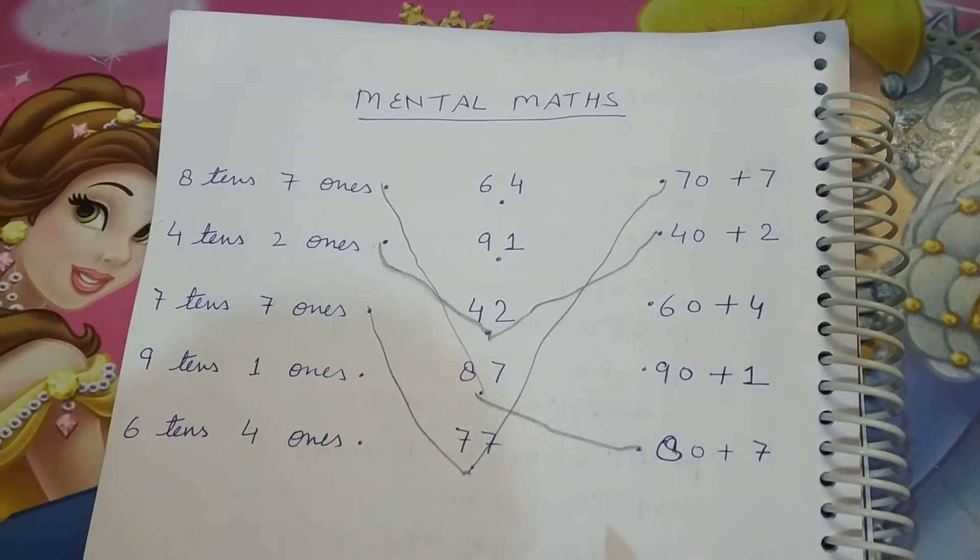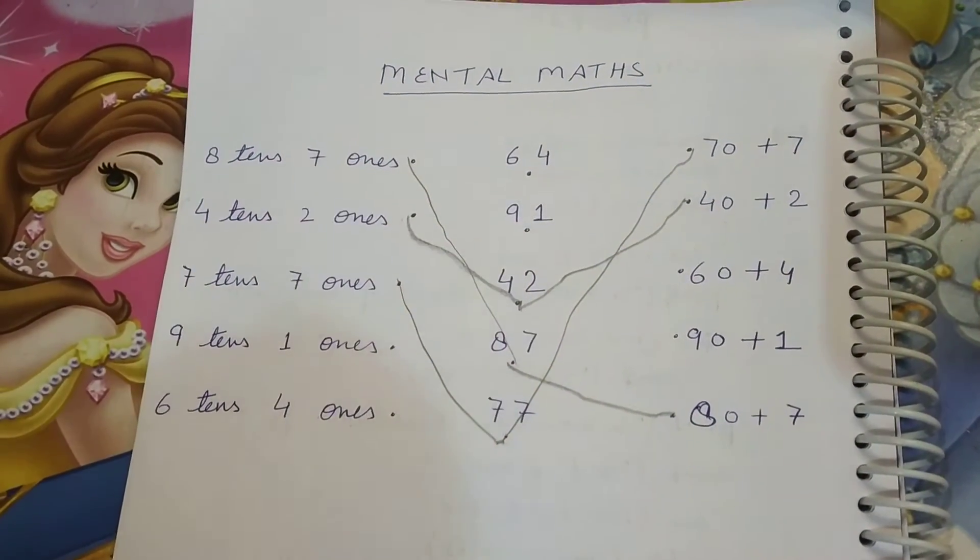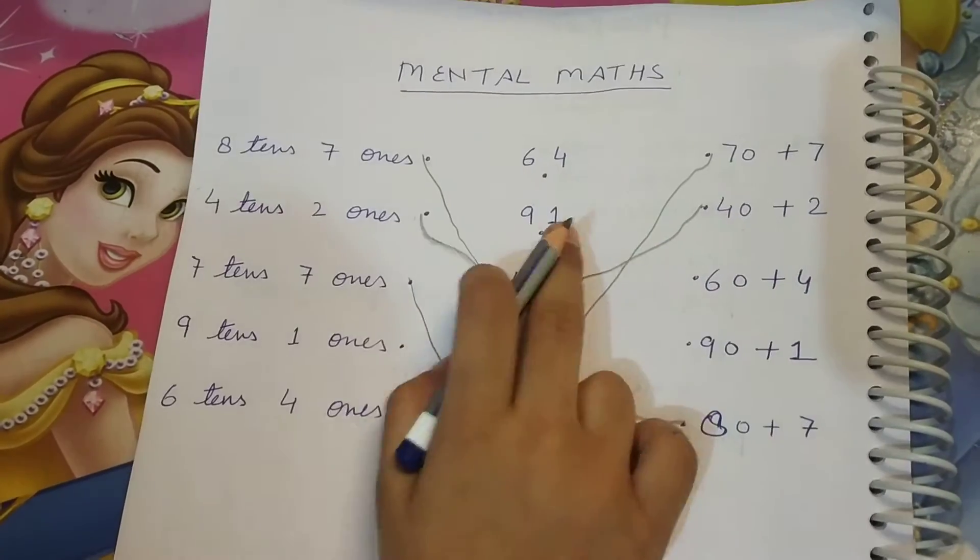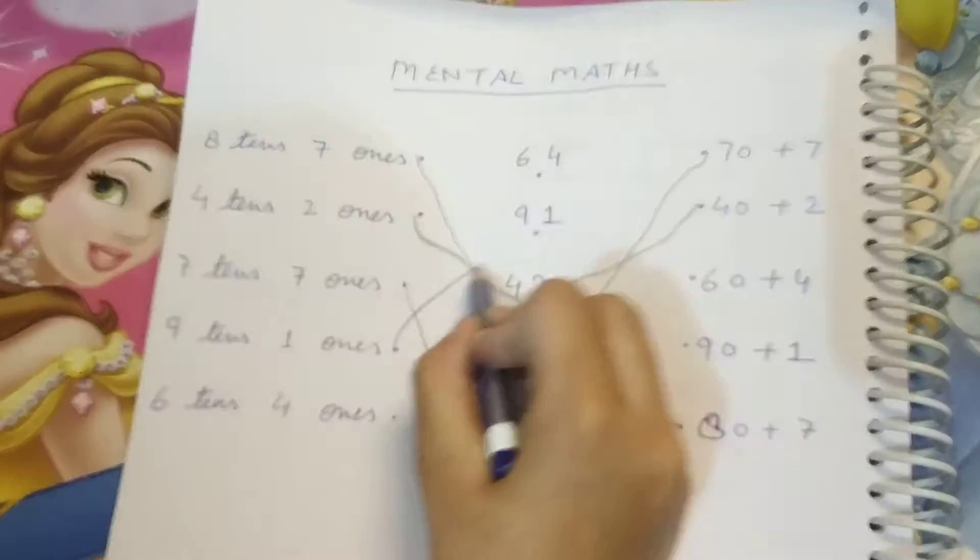Next. Nine tens and one ones. What's that? 91. Second line? 91. Yeah. Match it. Good.